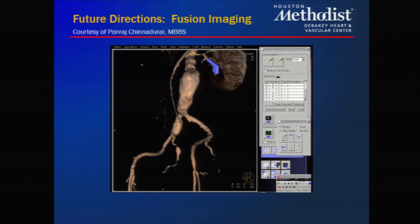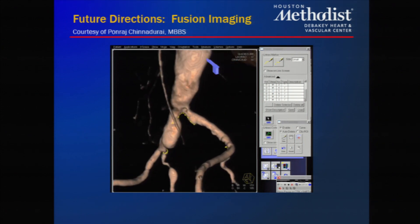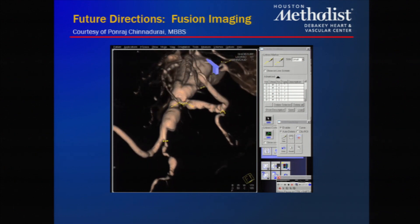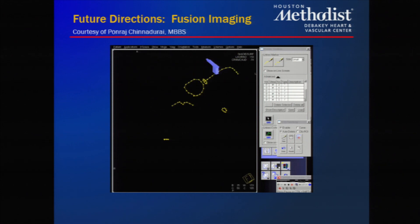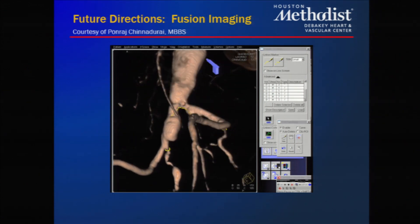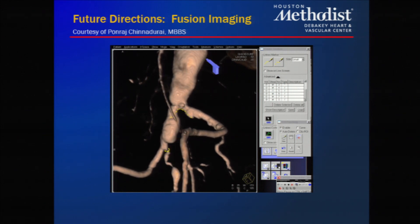Moving on to future directions, we have a close relationship with an engineer from Siemens who provided these images. This shows an example where one of our MRI datasets was loaded in to plan angiographic views for intervening on a patient with aortic and iliac aneurysms. He's set quite a few data points, going around looking at registration points and helping plan the viewing angles that will be used in the angiographic suite.